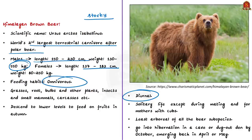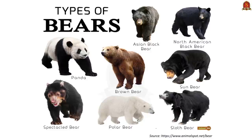Mating takes place during May and June, with cubs being born in winter in December and January. Interestingly, the Himalayan brown bear is arguably the least arboreal of all bear subspecies — meaning it least prefers living in trees. India has four species of bears: the Himalayan brown bear, the sloth bear, the sun bear, and the Himalayan black bear, sometimes called the Asiatic black bear.